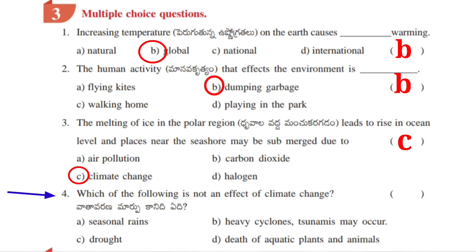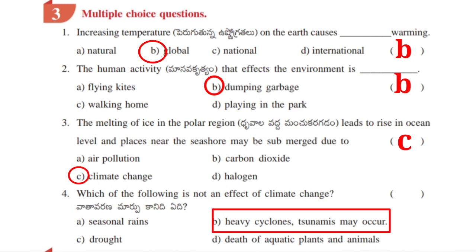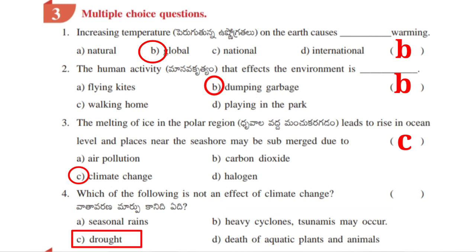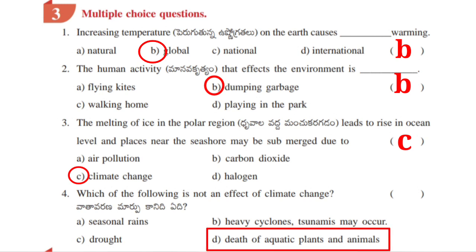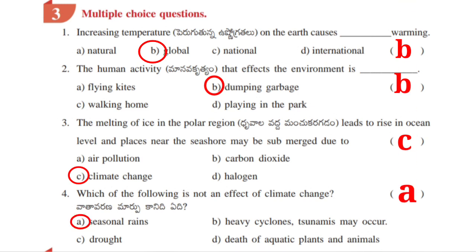Fourth question: which of the following is not an effect of climate change? A. Seasonal rains, B. Heavy cyclones, tsunamis may occur, C. Drought, D. Death of aquatic plants and animals. Answer is A. Seasonal rains.